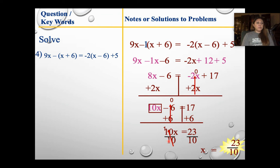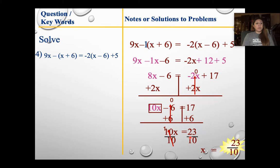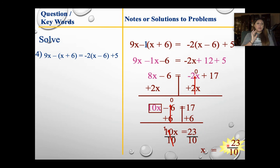So again, I'm going to divide both sides by 10. I can't simplify this anymore, so we're just going to leave it as 23 over 10. Please do not make this into a mixed number or a decimal — leave it as 23 over 10. It is perfectly fine in an algebra class.